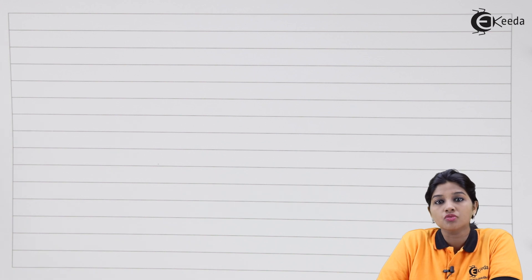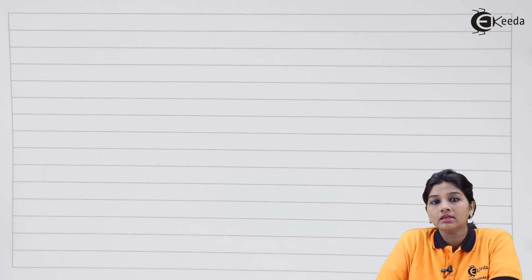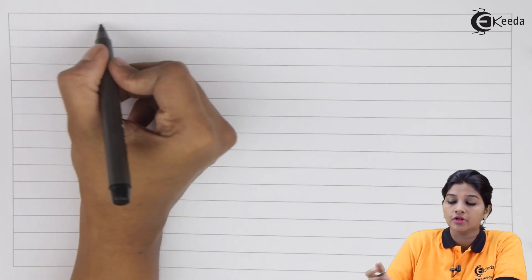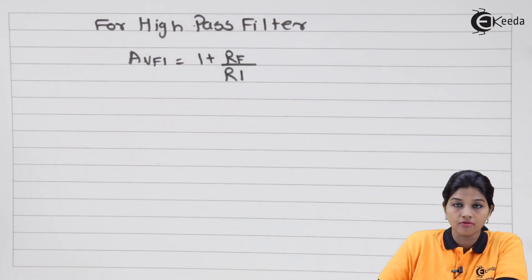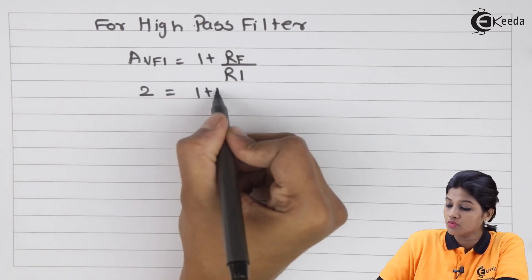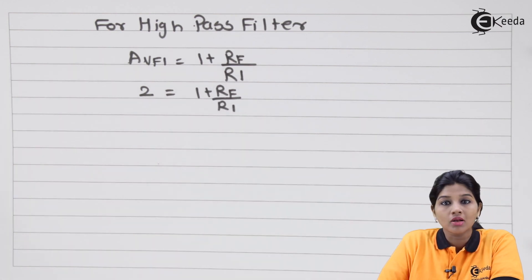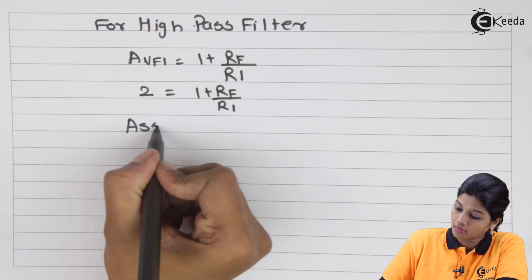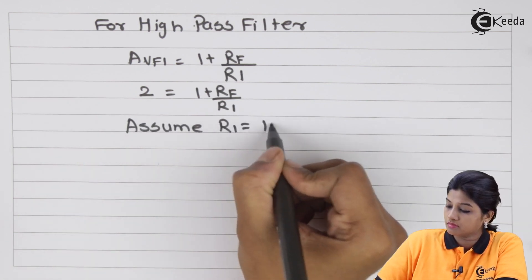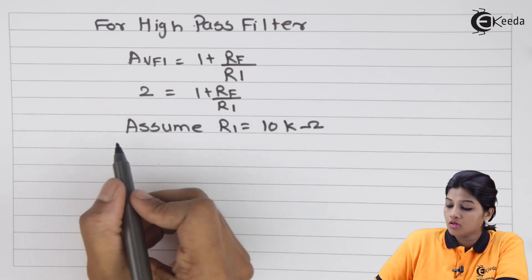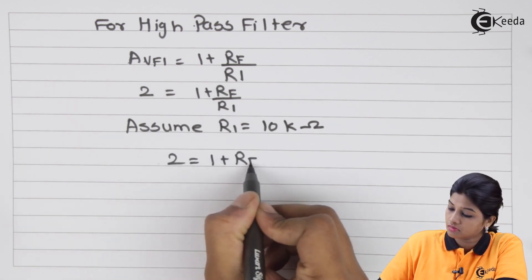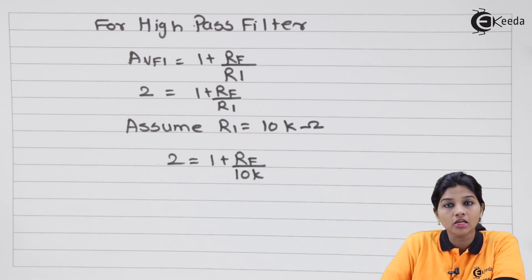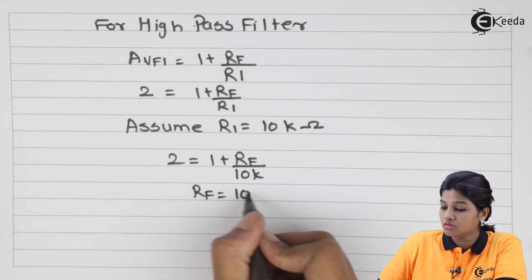Since the op-amp is used in non-inverting configuration, the gain formula is Avf equals 1 plus Rf/R1. For the high pass filter, Avf1 equals 2 equals 1 plus Rf/R1. Assuming R1 equals 10 kilo ohms and substituting, we get Rf equals 10 kilo ohms.